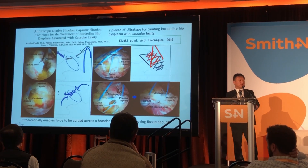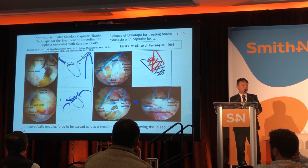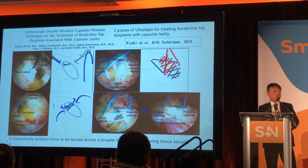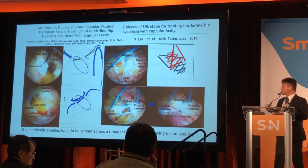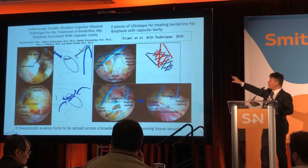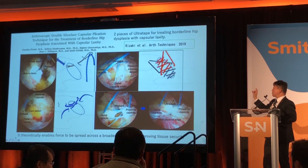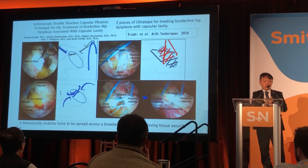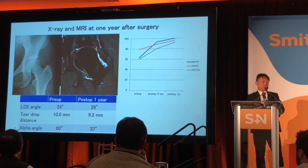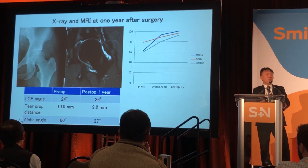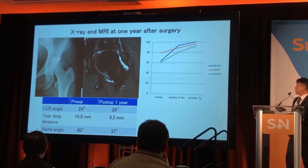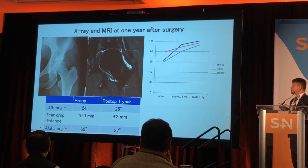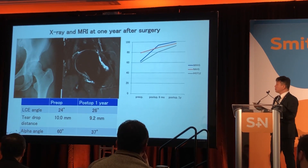What I did was perform the double shoelace technique, utilizing two pieces of FiberTape for treating borderline dysplasia with capsular plication. I started performing the shoelace capsular closure from anteromedially, and then performed a second pass posterolaterally, closing both together for more secure plication. Postoperative MRI at one year after surgery showed lateral center edge angle improved from 24 to 26 degrees, PRO scores significantly improved, and MRI showed good cartilage healing.